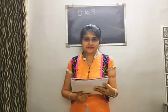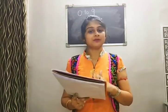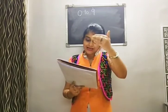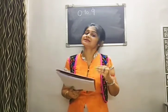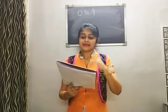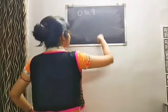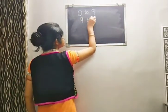0 plus 0 equals 0, 0 plus 1 equals 1, and in this way it continues till 0 plus 9. Then move to 1 plus 0, 1 plus 1, 1 plus 2, and again it comes to 1 plus 9. Then 2 plus 0, 2 plus 1 till 2 plus 9. Then 3 plus 0, 3 plus 1 till 3 plus 9. And in this way, till 9 plus 9.